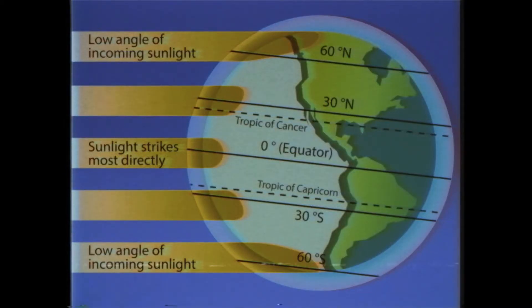But wait, there's more. The angle at which the sun hits the surface of the Earth determines how much solar radiation the surface receives. So if the sun is perpendicular to the equator, the maximum amount of solar radiation will hit the equator, causing the highest surface temperatures at the equator. The further north or south you go, the smaller that angle becomes, the less radiation received, and the lower the temperature.